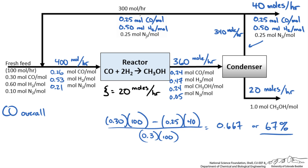We get 67% overall conversion of carbon monoxide even though the single pass conversion was only around 17-19%. This highlights the importance of the recycle stream — it allows unused reactants to be recycled back into the reactor feed, increasing overall conversion. To reiterate: start with a diagram, label knowns and unknowns, perform a degree of freedom analysis using molecular species balances, atomic species balances, or the extended reaction method, then solve the math.